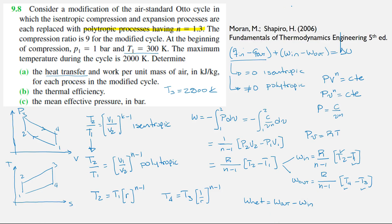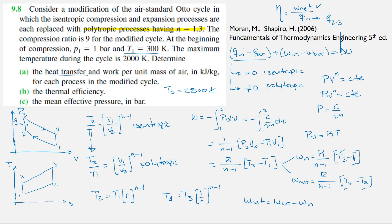We need this net work in order to find our thermal efficiency. Now we also need to find Q-in. Q-in will have two parts. Q-in will include the heat in process 2 to 3 — the combustion process — but we also need to recognize that we have some heat transfer in the polytropic processes. We need to figure out which contributions to take into account. What follows is the tricky part.